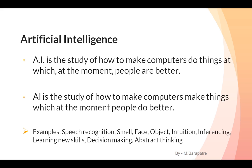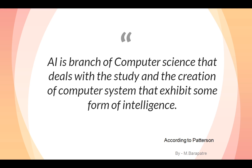For example, we have speech recognition systems — you might know about Alexa, Siri, and Cortana. We also have smell detector sensors, face recognition cameras, object recognition, and inferencing — that means we can draw conclusions. Learning new skills, decision making, and abstract thinking are also properties that humans have, and we have to implement all these characteristics into a machine.